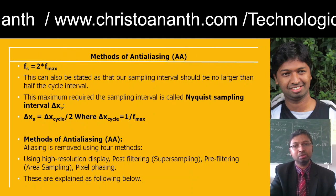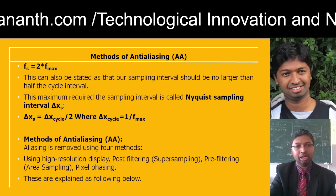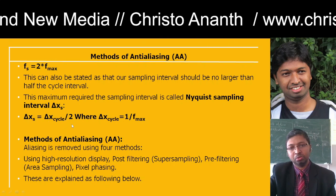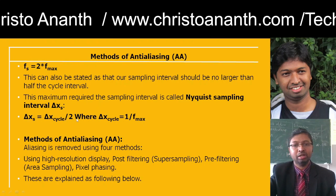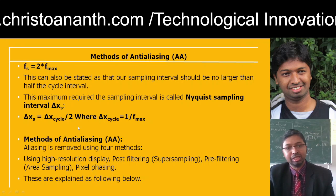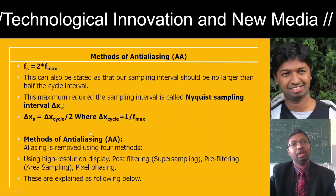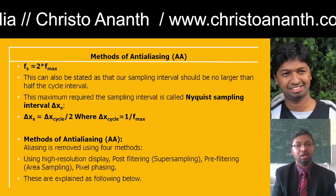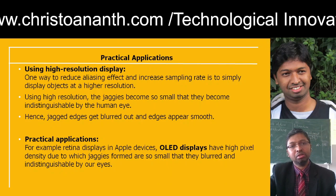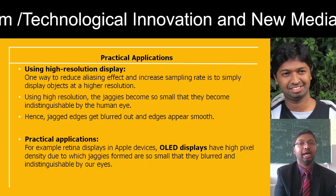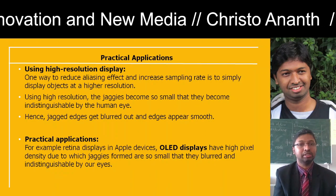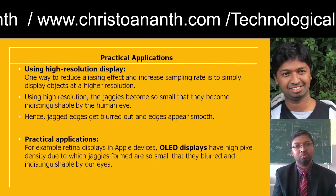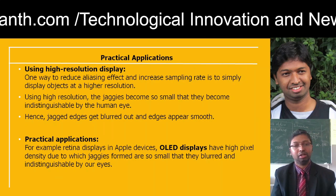Under-sampling occurs when sampling is done at a frequency lower than the Nyquist sampling frequency: fs = 2 * f_max. The Nyquist sampling interval del_x can be calculated as del_x_cycle / 2, where del_x_cycle = 1 / f_max. Anti-aliasing can be removed using a high-resolution display, post-filtering methods like super sampling, or pre-filtering methods like area sampling or pixel phasing. Increasing the sampling rate increases resolution and makes jagged noise too small for the human eye to distinguish.